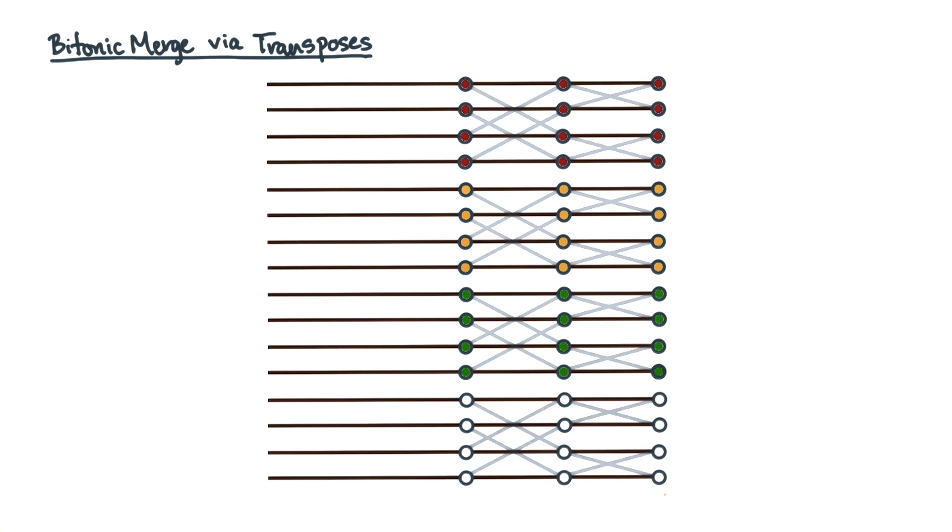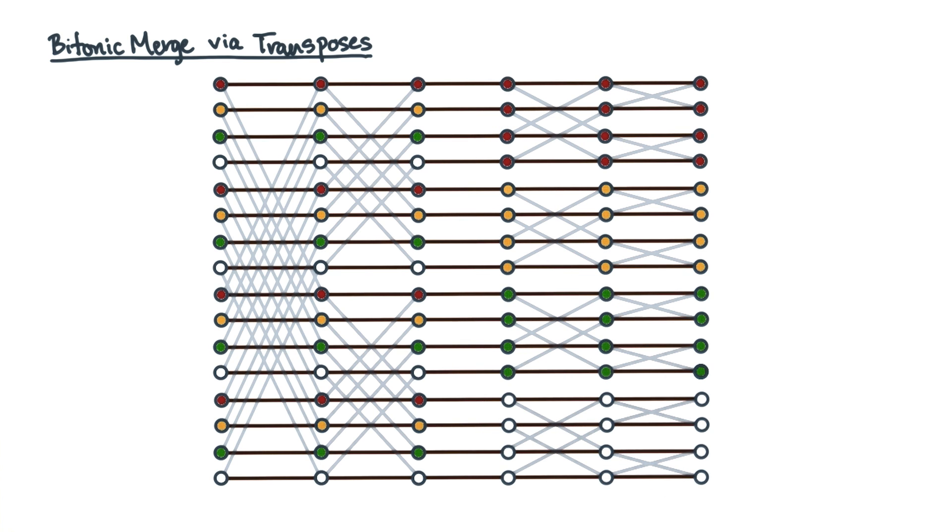To make this scheme work, you're going to need to reshuffle the data in between. This reshuffling is called a transpose.